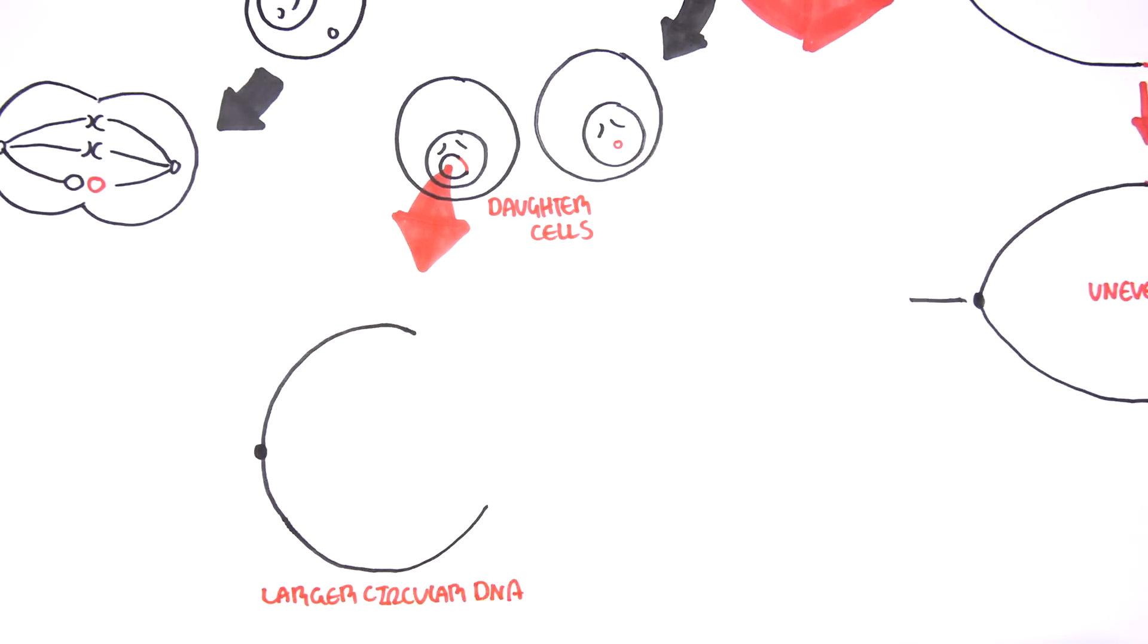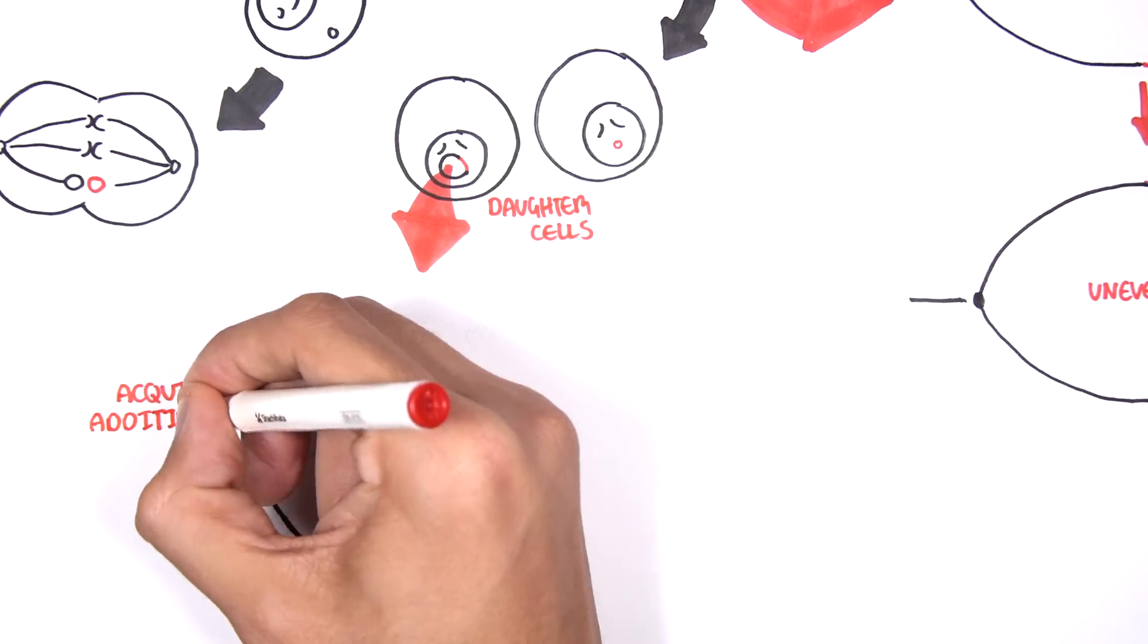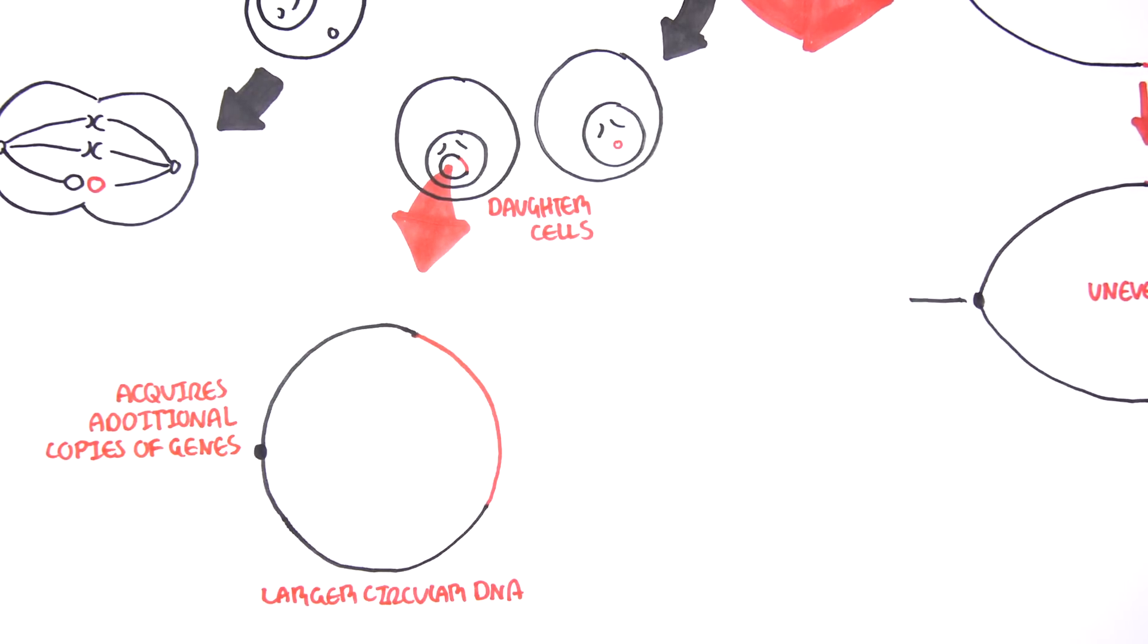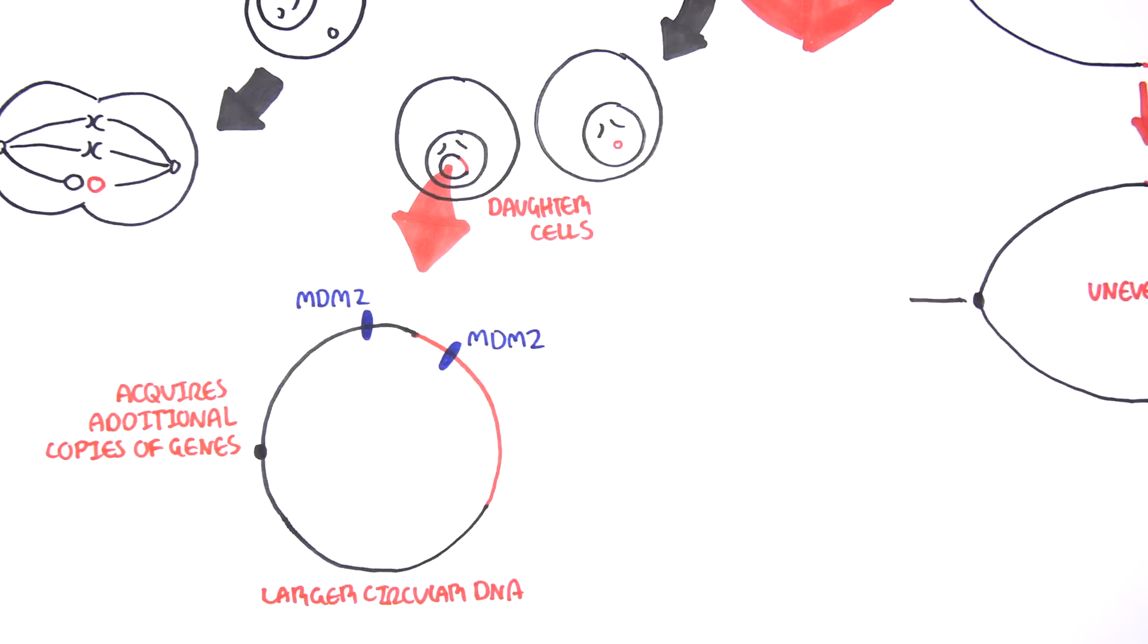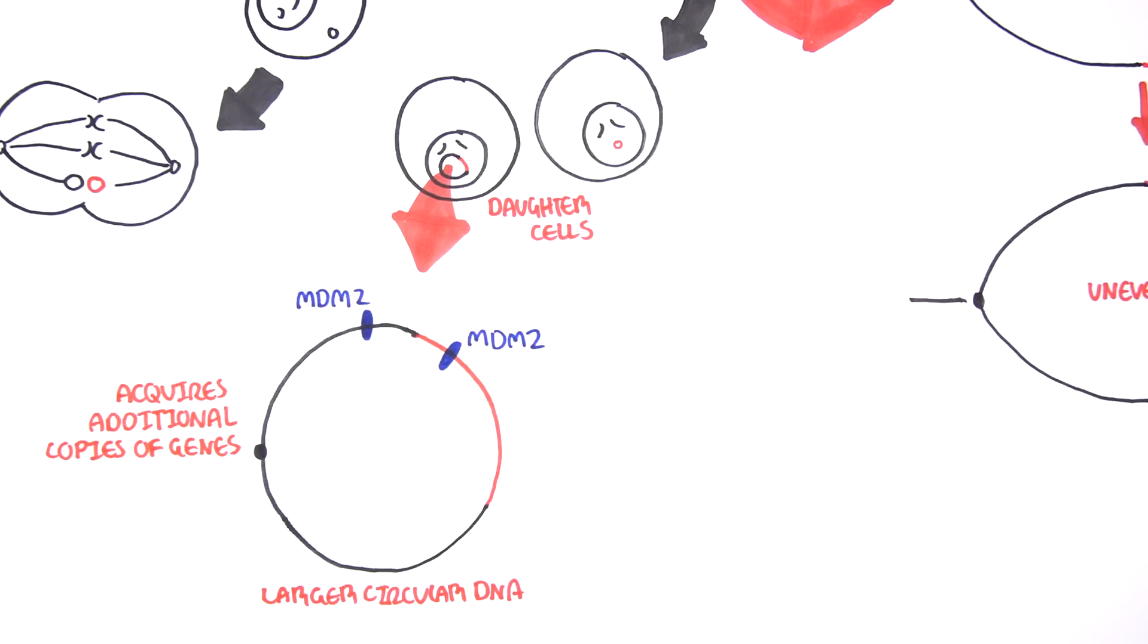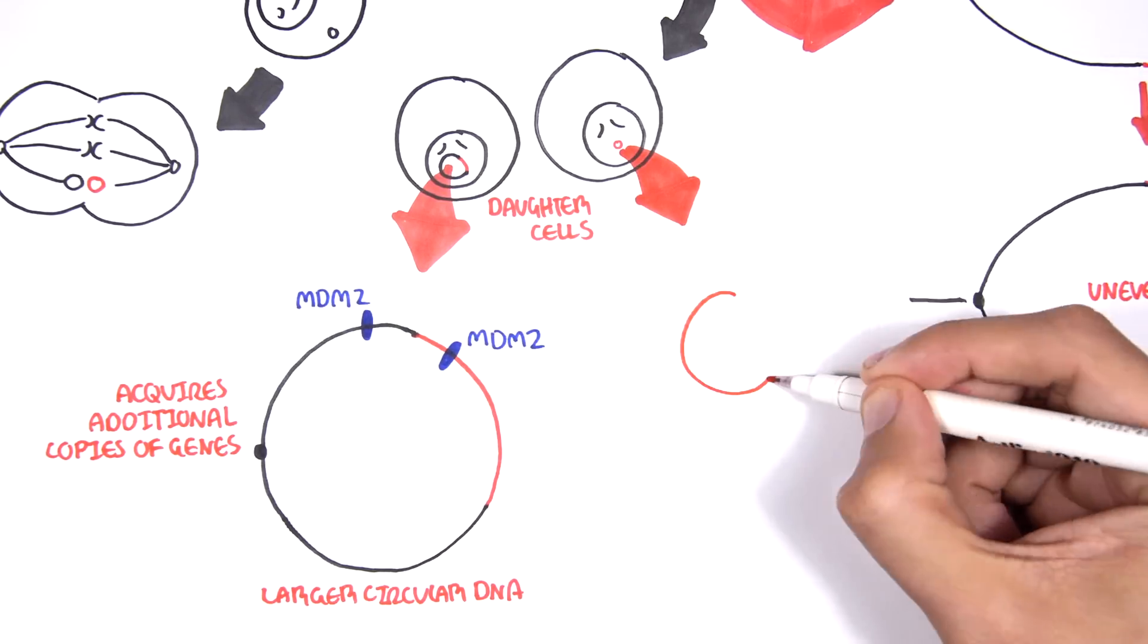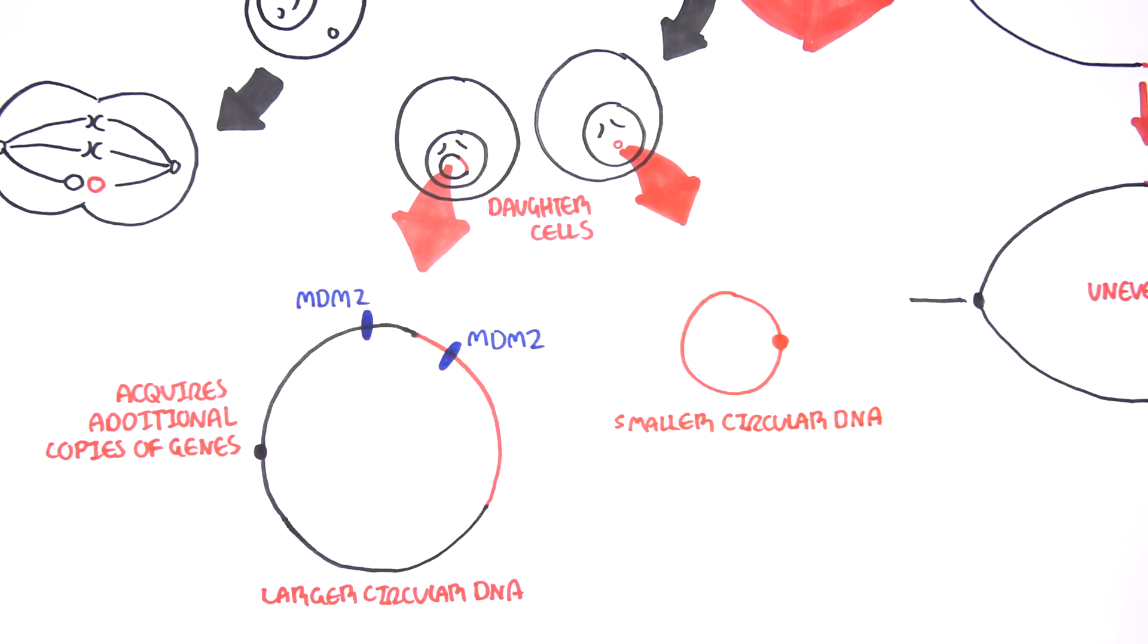As a result, the larger ring acquires additional copies of genes, including powerful cancer-promoting genes such as MDM2. At the same time, the smaller ring loses those genes.